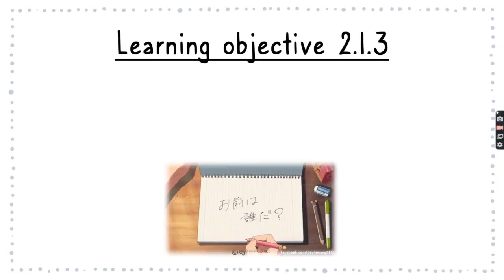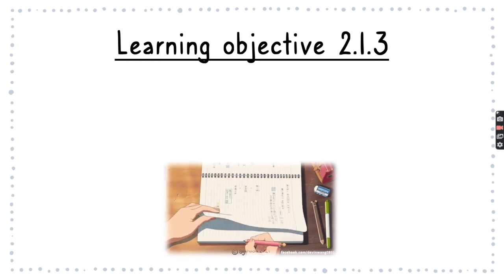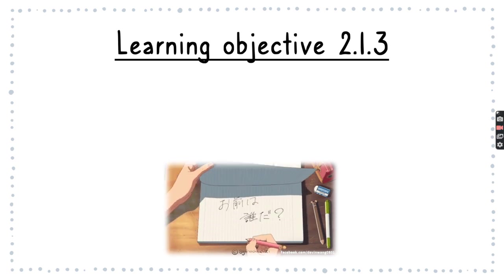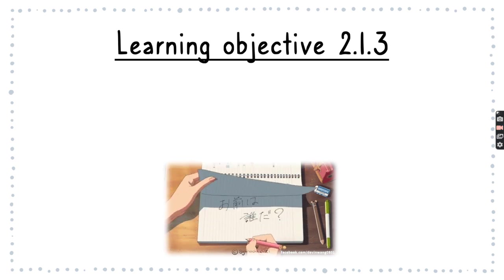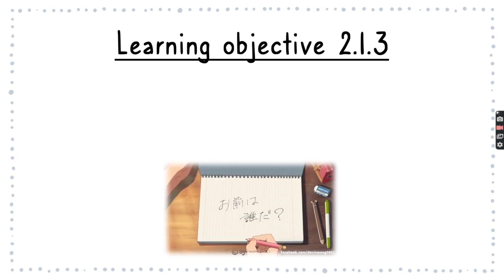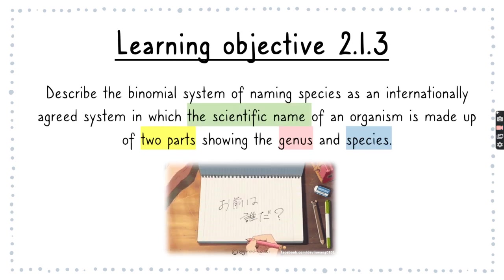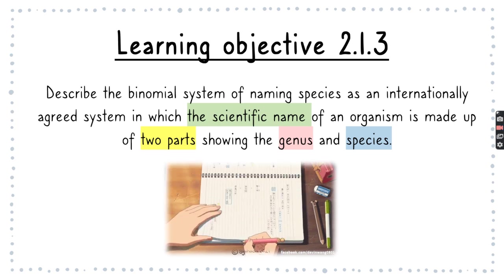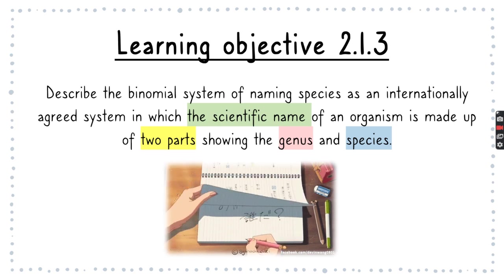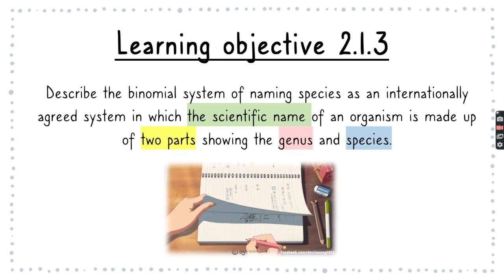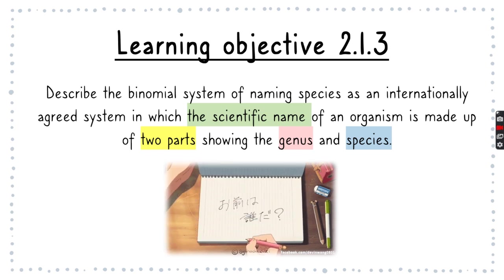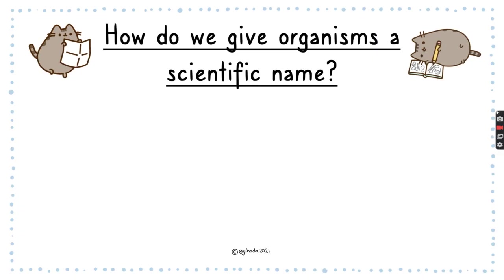Now that we've defined species as a group of organisms that can breed to produce a fertile offspring, we're going to cover the next learning objective, which is 2.1.3: describe the binomial system of naming species as an internationally agreed system in which the scientific name of an organism is made up of two parts showing the genus and species. What this learning objective is asking is: how do you give organisms a scientific name?